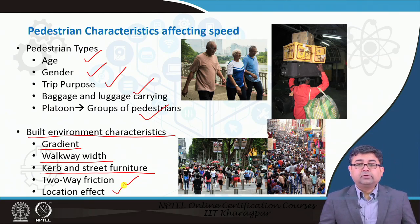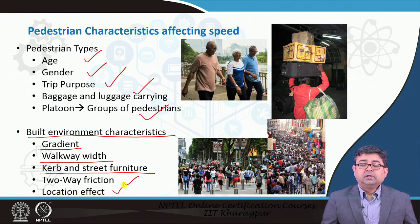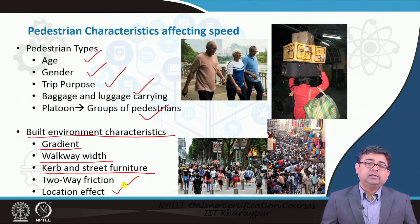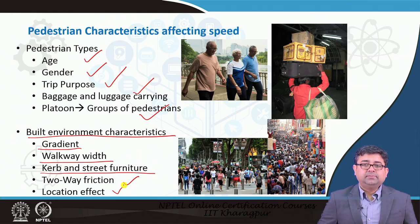Last but not least is the location effect. If you are walking through an area with many things to see — museums, good restaurants, good shops — your speed automatically goes down because you want to slow down and appreciate the environment through which you are walking. This gives you an idea of all the factors that pedestrian speed depends upon.